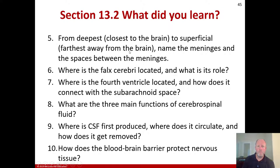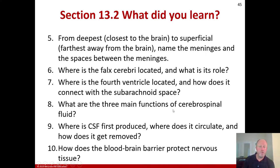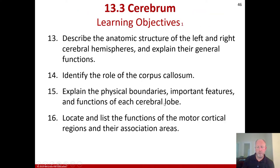Review questions: From deepest to most superficial, name the meninges and the spaces between them. Where is the falx cerebri located and what is its role? Where is the fourth ventricle located and how does it connect with the subarachnoid space? What are the three main functions of cerebrospinal fluid? Where is CSF first produced, where does it circulate, and how is it removed? How does the blood-brain barrier protect nervous tissue? We'll return for the cerebrum in section three of Chapter 13.